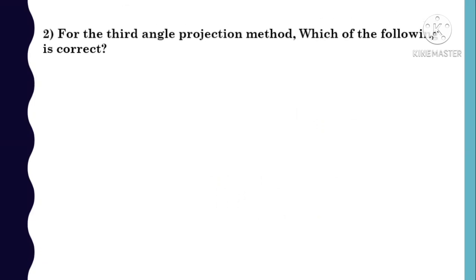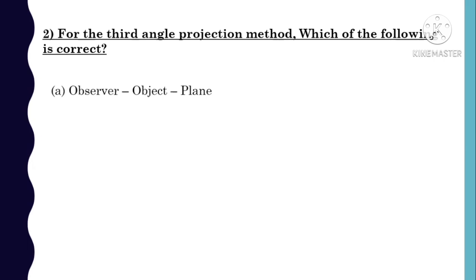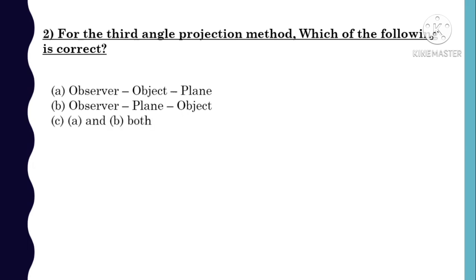Second MCQ: For the third angle projection method, each of the following is correct. Options are: A) observer, then object, then plane; B) observer, then plane, then object; C) A and B both; D) none of these.